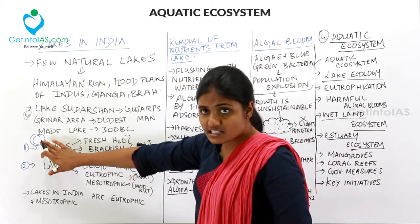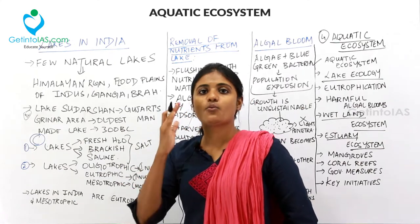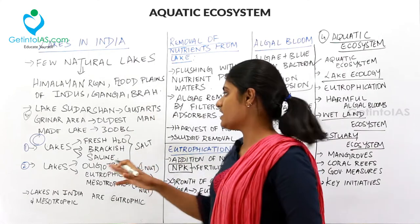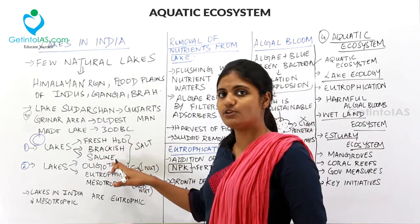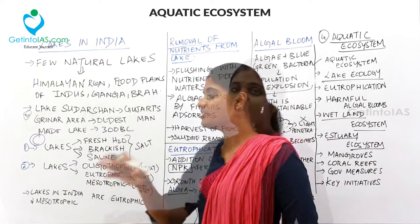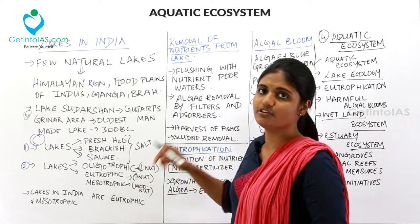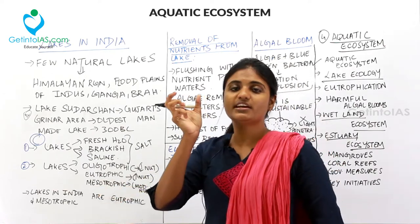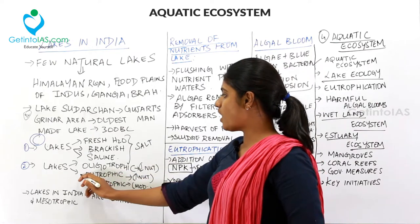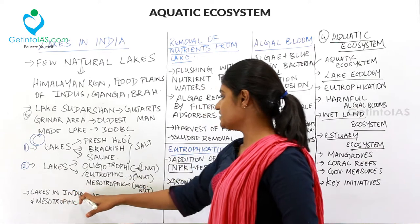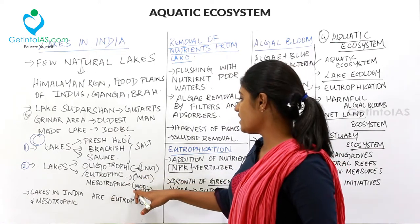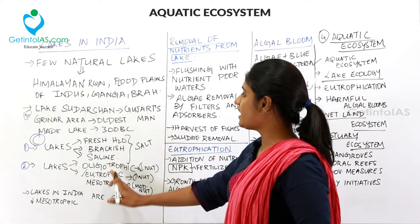Lakes are classified into two types: based on salt content and based on nutrient level. Based on salt content, they are divided into freshwater, brackish water, and saline water. Based on nutrient level, lakes are classified as oligotrophic (low nutrients), mesotrophic (moderate nutrients), and eutrophic (high nutrients). Lakes in India are mostly eutrophic and mesotrophic.